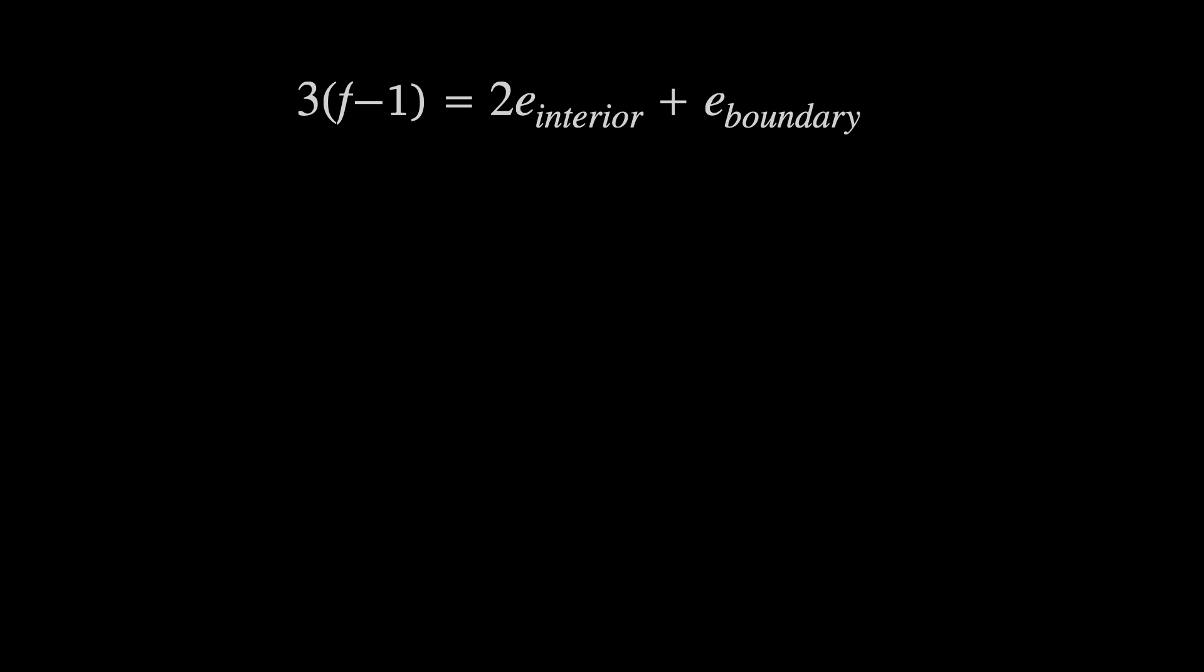We already have three f minus one equals two E interior plus E boundary. We can add E boundary into the bracket multiplying two and as long as we subtract E boundary at the end we still end up with one times E boundary in total. But here we can recognize what's in the bracket. The number of interior edges plus the number of boundary edges is simply the total number of edges E.